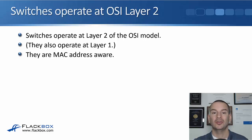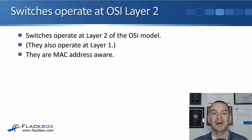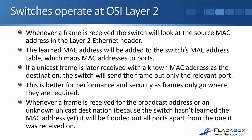Switches operate at layer 2 of the OSI model — they also operate at layer 1 since they have physical ports. This means switches are MAC address aware. Whenever a frame is received, the switch looks at the source MAC address in the layer 2 Ethernet header, learns that MAC address, and adds it to its MAC address table, which is a mapping between the MAC address and the port it is reachable on. If a unicast frame is later received where that MAC address is the destination, the switch will only send it out the relevant port, unlike a hub that floods it everywhere. This is better for performance and security as frames only go where they are required. Whenever a frame is received for the broadcast address or an unknown unicast address — unknown because the switch hasn't learned about it yet — it will be flooded out all ports apart from the one it was received on.